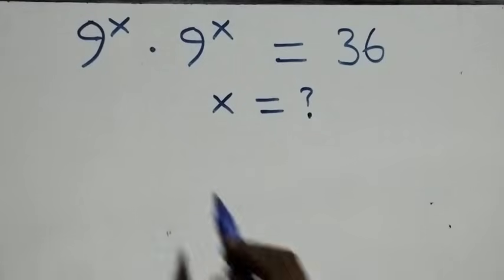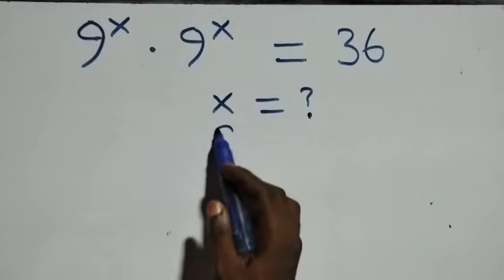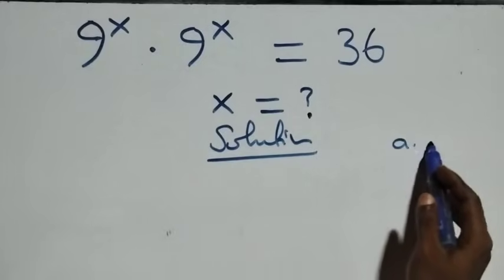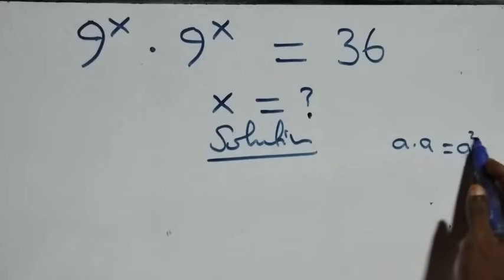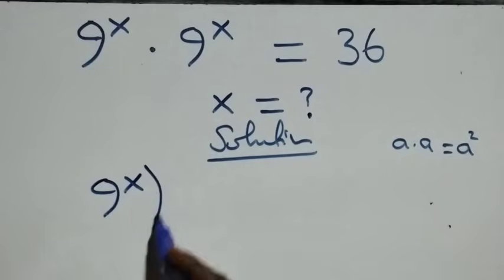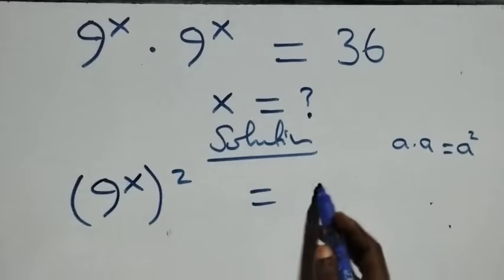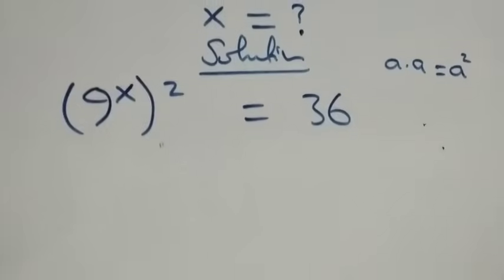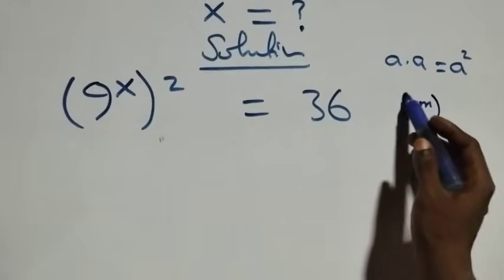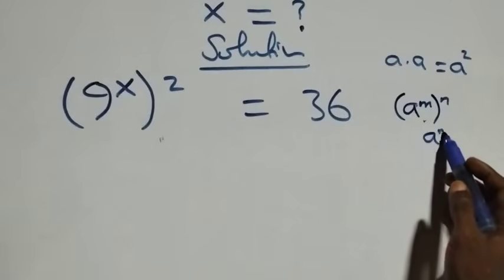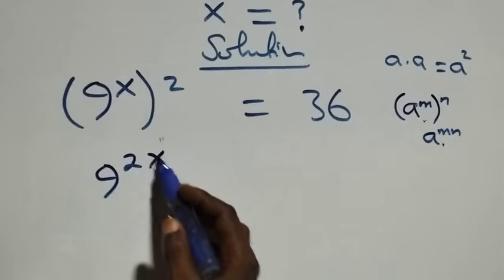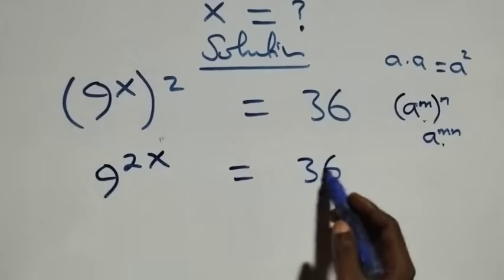Hello, you're welcome. Here we solve a nice exponential equation. We have a times a, which can be written as a squared, and similarly the other side, giving us something raised to power x, all squared, equals 36. From the law of indices, a raised to power m, raised to power n, equals a raised to power mn. Applying this, we get 9 raised to power 2x equals 36.